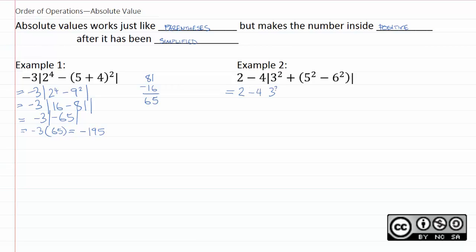So, we have 2 − 4 times the absolute value of 3 squared plus (25 − 36). Then, we're just going to do 25 minus 36 because we have that inside parenthetical. That comes out to negative 11. Again, you can do that by hand if you wish. 36 minus 25 is 11. We know 36 is bigger. Therefore, our answer is negative.